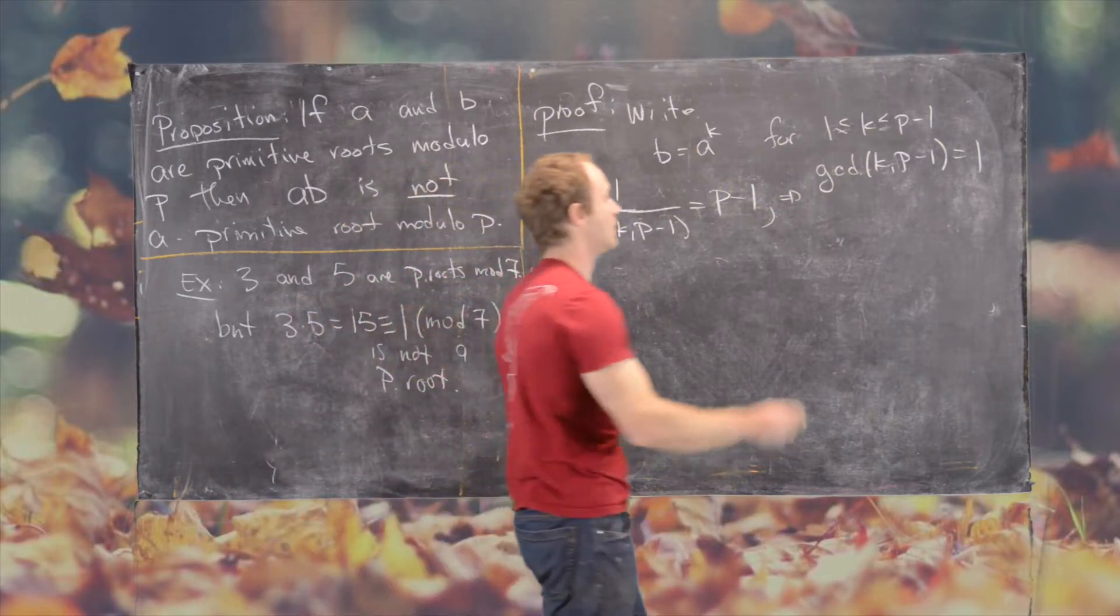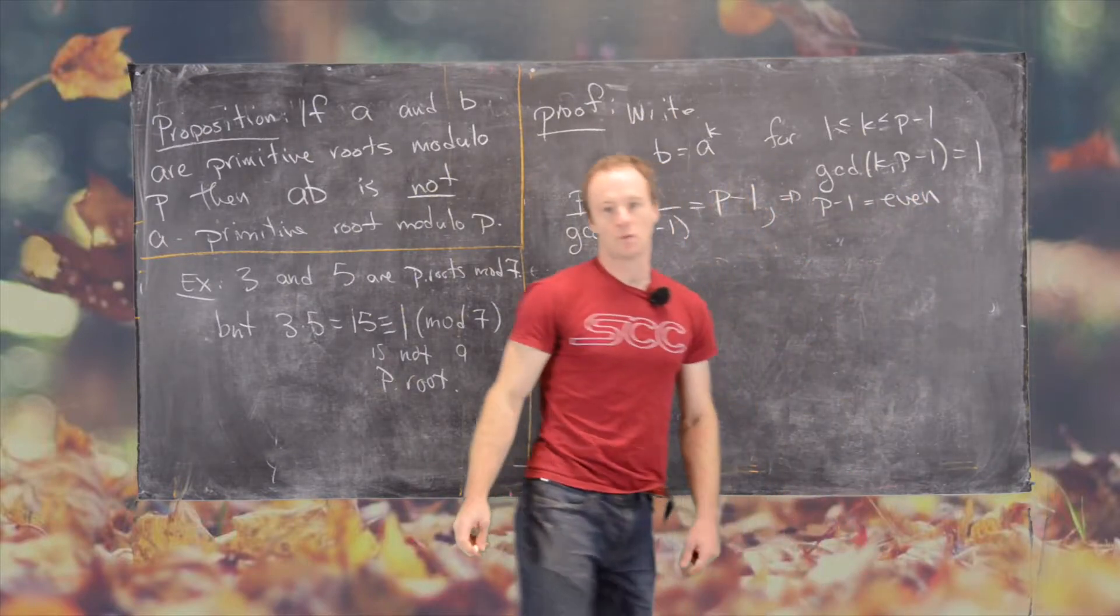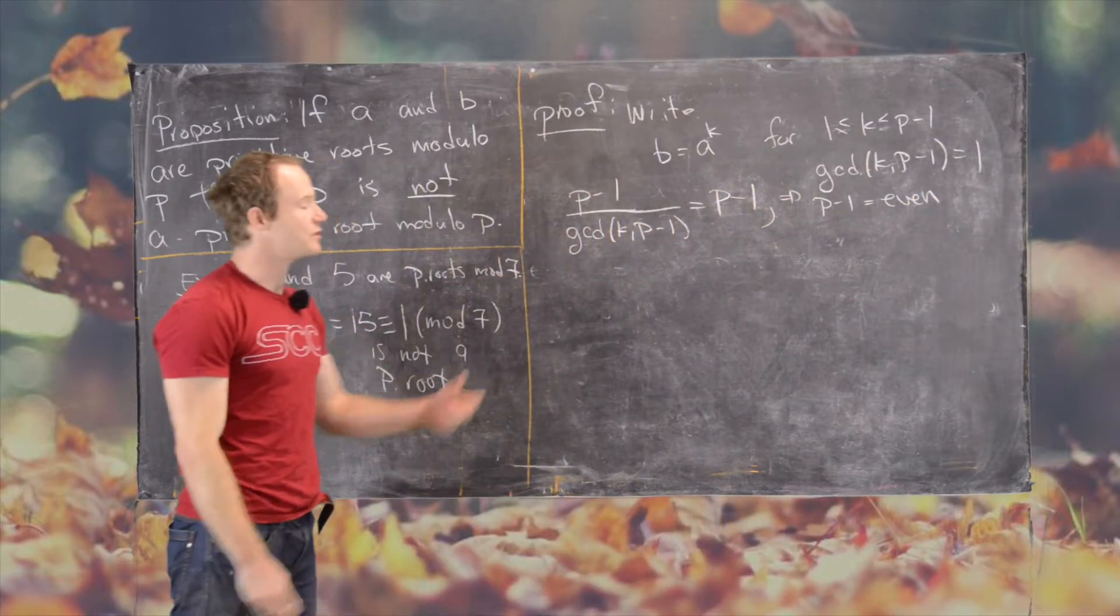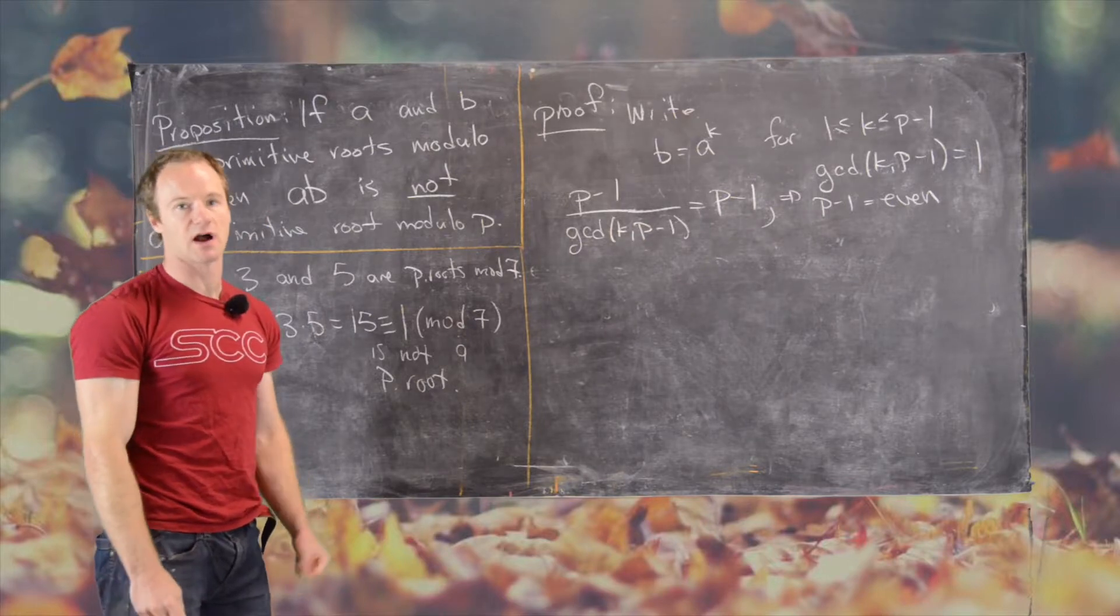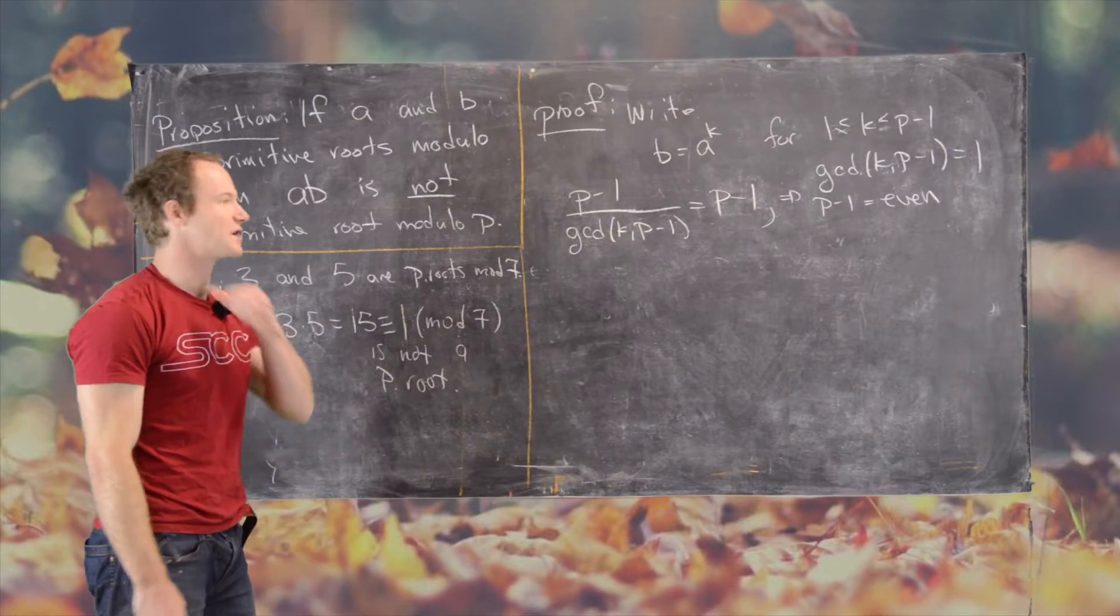But now we know that P minus 1 has got to be even. Well, I guess we don't know that because we could have an odd prime, but there's only one. Sorry, we could have an even prime, but there's only one of those, and that's two.